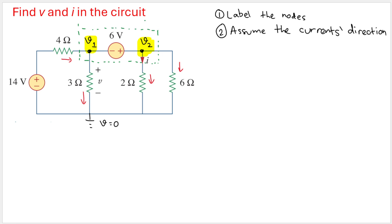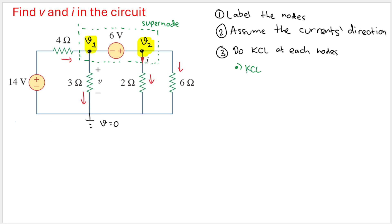We draw the supernode like this. Because this is the only node in the circuit, we apply KCL at that node. The third step is to do KCL — specifically, KCL at the supernode.